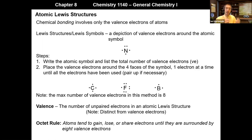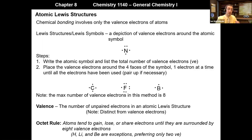Since atoms can gain, lose, or share electrons, there are actually multiple forms of chemical bonding. One last note on the octet rule: hydrogen, lithium, and beryllium are exceptions, since they prefer only two valence electrons. Hydrogen can gain or share one electron to reach two. Lithium and beryllium tend to lose electrons to go back to two valence electrons — the configuration of helium.